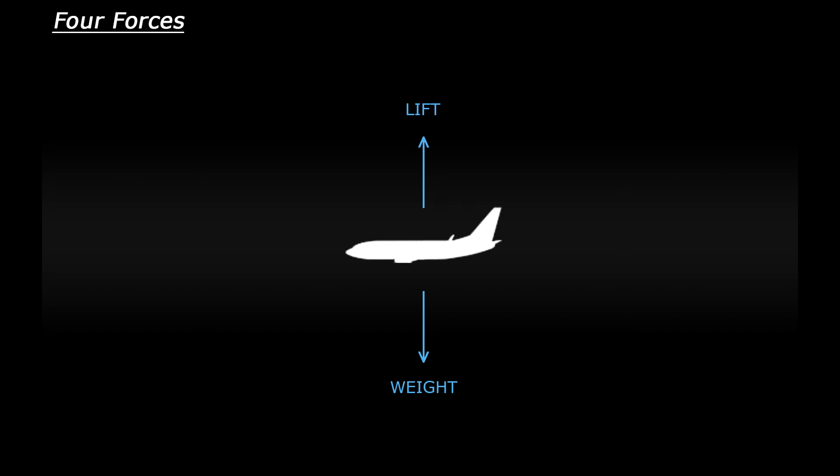The third force is what we get from the engines and that is thrust. This is what propels the plane forward through the air. And then working opposite or against thrust we have drag or you could also call it wind resistance where the friction of the air passing over the plane is trying to slow it down.